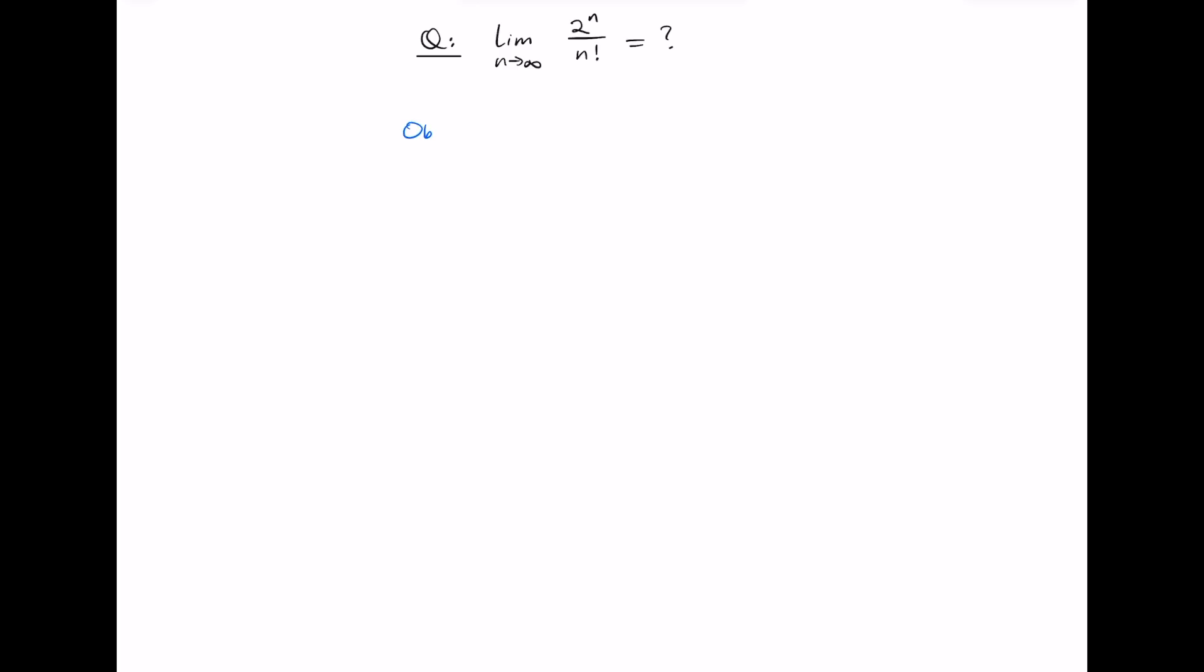To answer this question, we're going to first make an observation. The observation is that n factorial is going to be greater than 3 to the power of n eventually, meaning for n large enough.